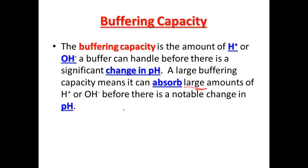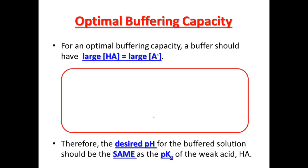You'll see that we can have two buffers that have the exact same pH, but one can absorb more. The optimal buffering capacity will take place when the H+ concentration and the A- concentration are equal to each other, but also they're relatively larger numbers. So it's possible you could have both those be 0.1 molar, or both be 0.2 molar. The one that has higher concentrations of both will be a better buffer.